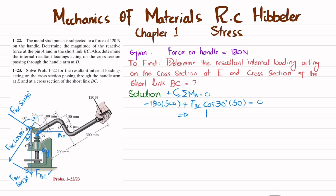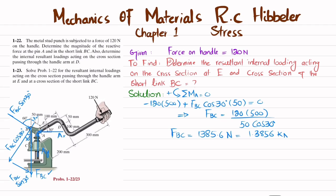From this equation, FBC equals 120 × 500 divided by 50 × cos(30°). Calculating, FBC equals 1385.6 Newton, or 1.3856 kilo Newton. This is the reaction force in member BC.